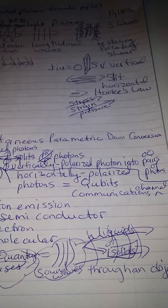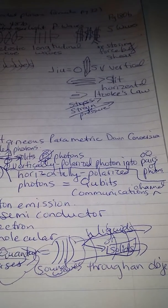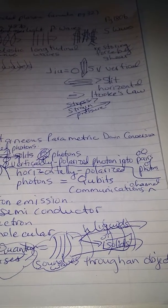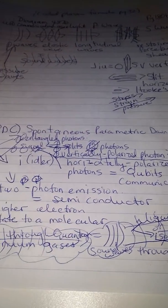And it makes a vertically polarized photon into pairs of photons, horizontally polarized photons into qubits, which opens up a communications channel.